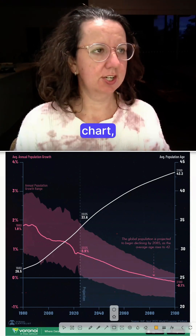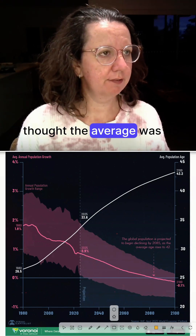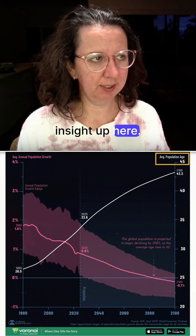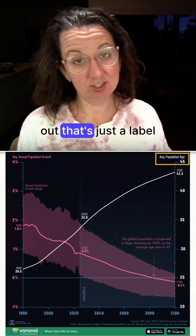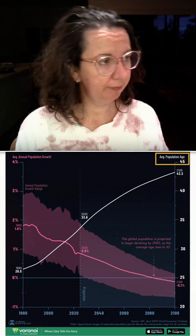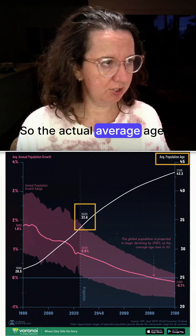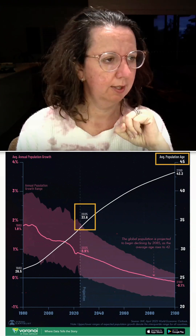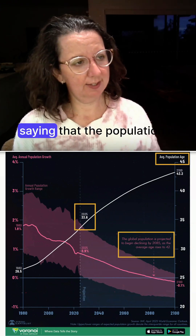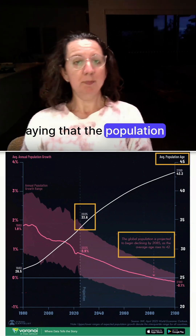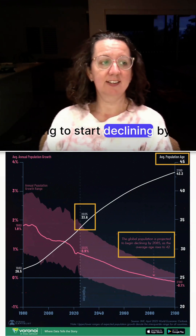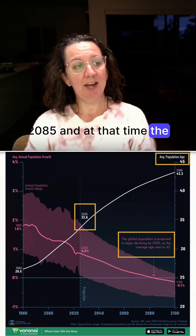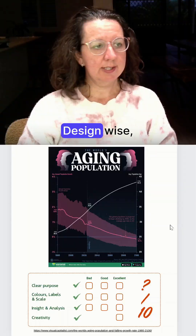At first when I looked at this chart I thought the average was 45 because it looks like an insight up here. Turns out that's just a label though. So the actual average age is 33 in the middle here. There's a great insight here saying that the population is going to start declining by 2085 and at that time the average age will rise to 42.